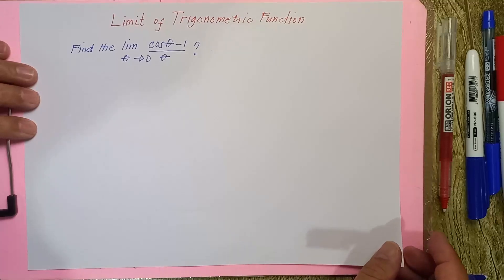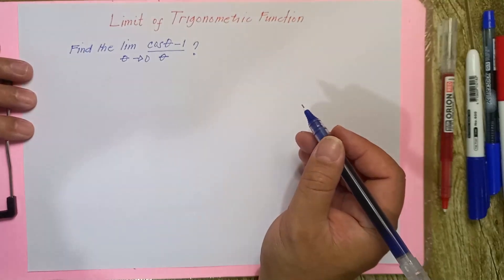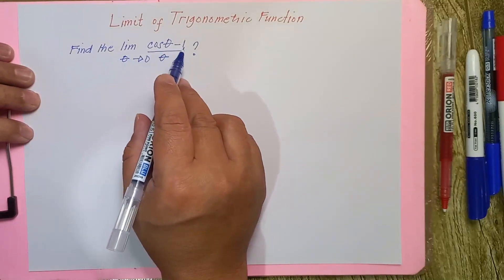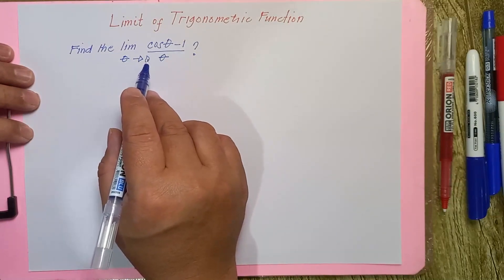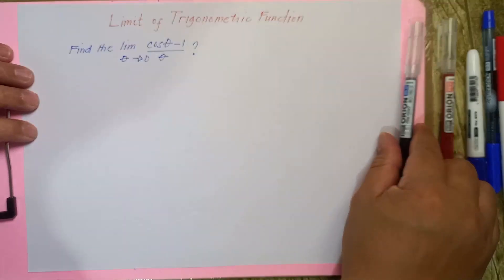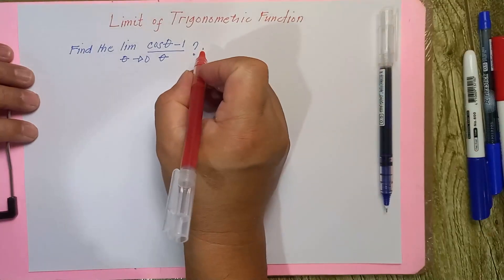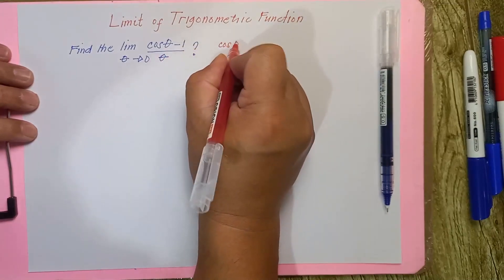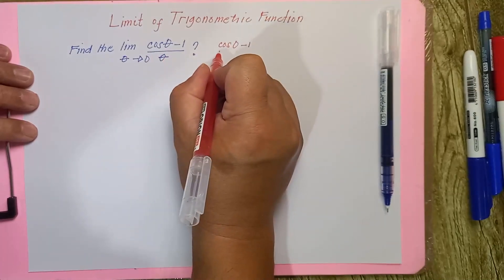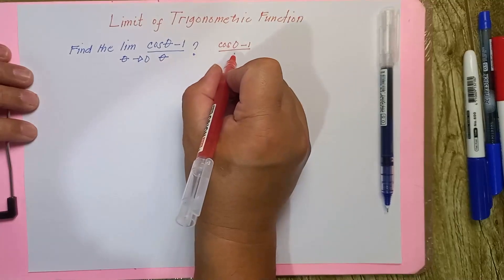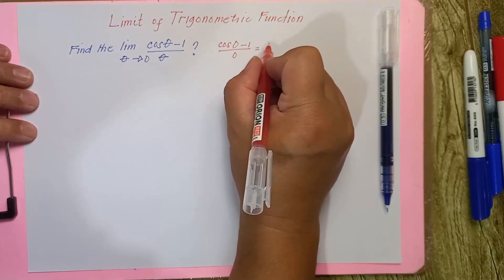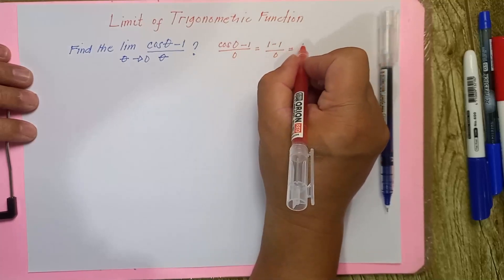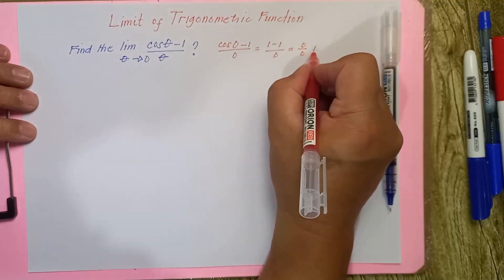Our focus is finding the limit of trigonometric functions. One problem says: find the limit of (cosine theta minus 1) over theta as theta approaches 0. Using direct substitution, cosine 0 is 1, so we get 1 minus 1 over 0, which gives 0 over 0 — an indeterminate form.